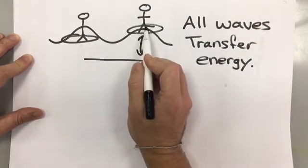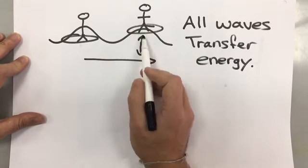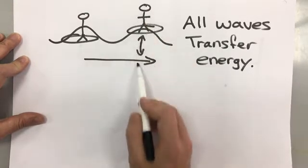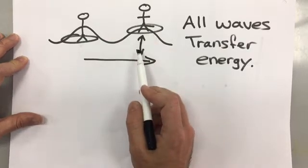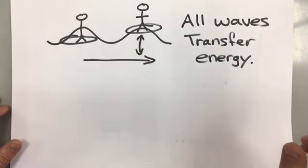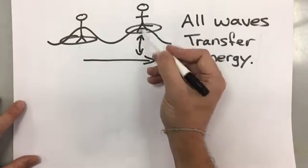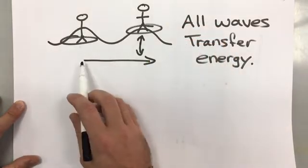The surfer represents a particle in the wave and he is moving up and down, so waves are vibrations of particles or movements of particles. In this case the surfer is moving up and down and the wave is moving forward.